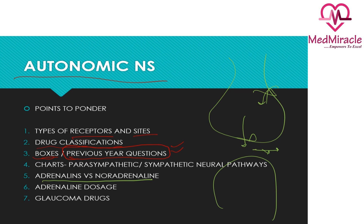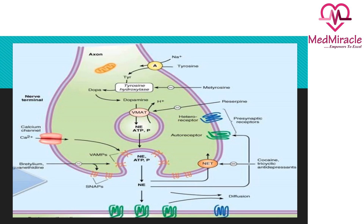Another important topic is adrenaline — when it's adrenaline and when it's not — and vasomotor reversal. These are important topics to stress. Adrenaline doses are asked very frequently: you have to know the dose at various sites — intratracheal, subcutaneous, IV — and the dilution. The glaucoma section can be covered in ophthalmology, where you can study side effects and images. This is the pathways section showing inhibitors and their sites of action.